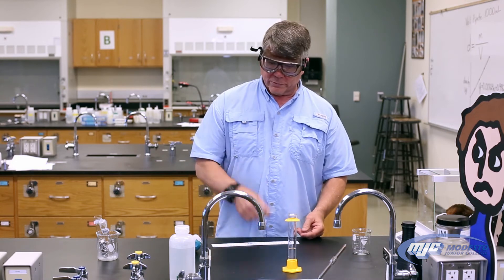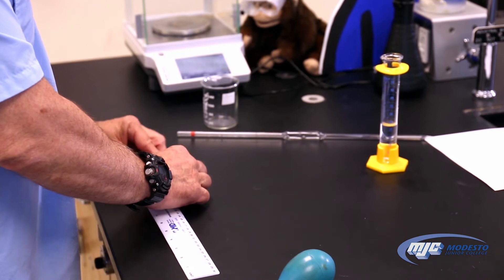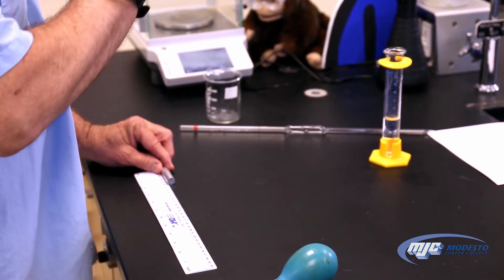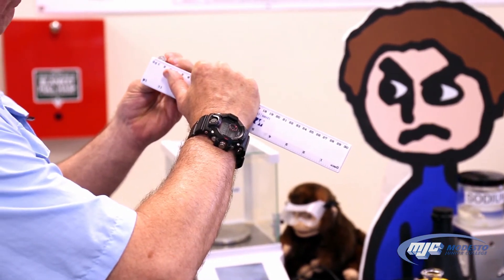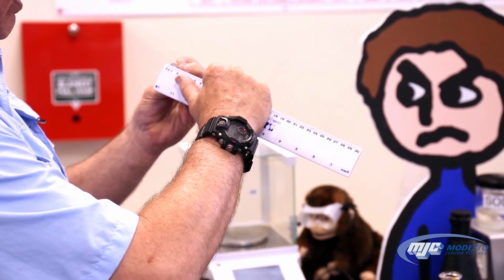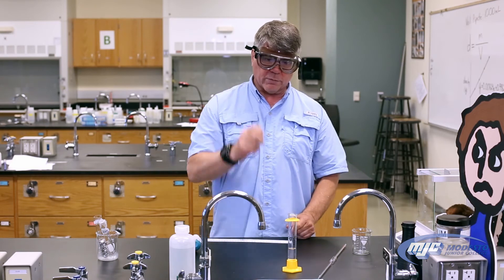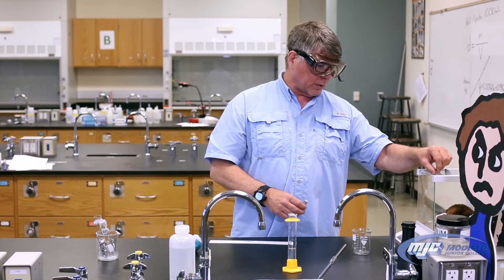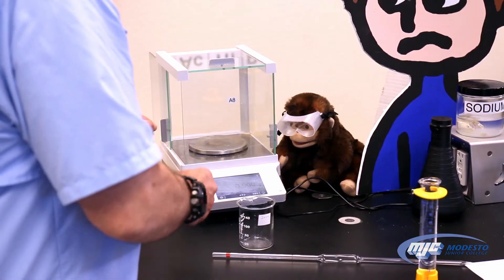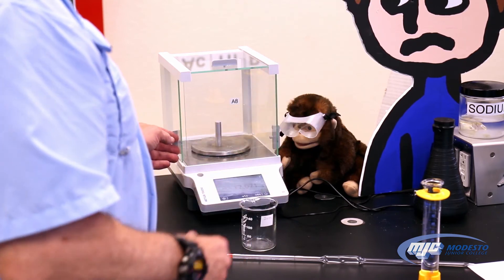Now let's start with the first part — the metal cylinder. All we do is measure the height and the diameter. To measure the height, place one end against the zero on the ruler and read the other end — two places past the decimal in centimeters. That's your A2. To measure the diameter, line up the zero on one side and move it until you find the largest distance — that's your A3, also in centimeters. For the mass, place the cylinder on the balance — make sure it reads zero first by taring — and record the mass to three places past the decimal in grams. That's your A4.